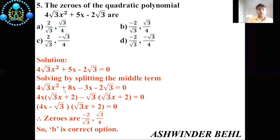4√3x² + 8x - 3x - 2√3 = 0. So 4x(√3x + 2) - √3(√3x + 2) = 0. Now you will see here brackets are same. So we put here (4x - √3)(√3x + 2) = 0. Therefore, the zeros are -2/√3 and √3/4. So b is the correct option.